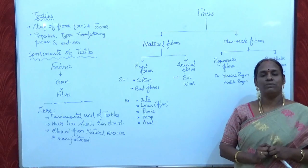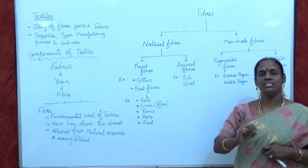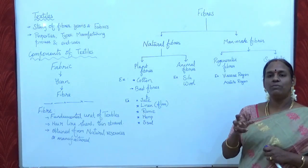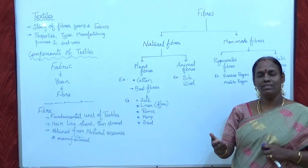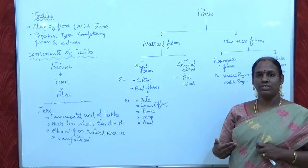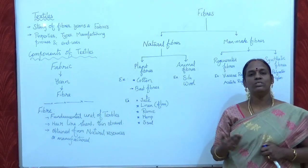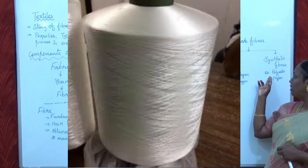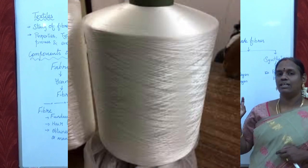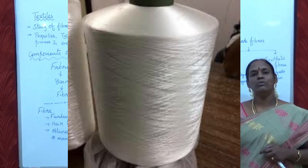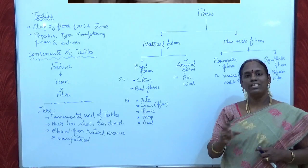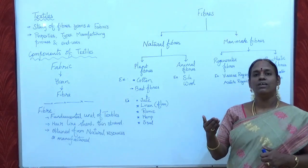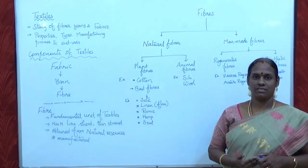In case of synthetic fibres, the raw materials are completely chemicals. From pure chemicals, some fibres are manufactured, and those are called synthetic fibres. Examples are polyester and nylon. In most synthetic fibres, petroleum byproducts are used as the raw materials.